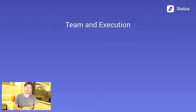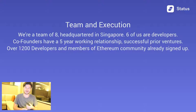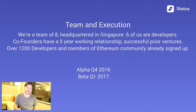Now, execution. We're a team of eight headquartered in Singapore — six of us are developers. This year, we've built the foundation of a platform, and our alpha release is out at the beginning of December. We have a beta release coming in Q1 of next year. We've received a grant from the Ethereum Foundation directly, and we've already had over 1,200 developers and members of the blockchain community sign up for early access. My co-founder Jared and I have been working together for five years. Our last successful business was in user acquisition, and once we're out of beta, driving installs to Status is something we have a very firm grasp on.